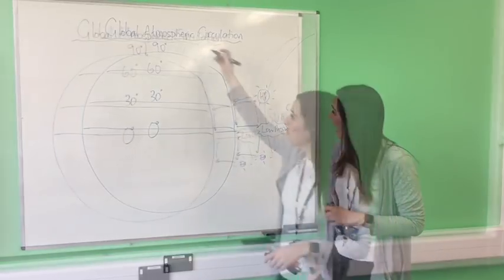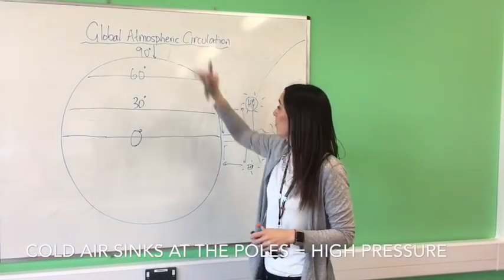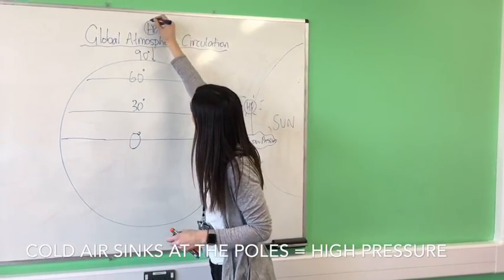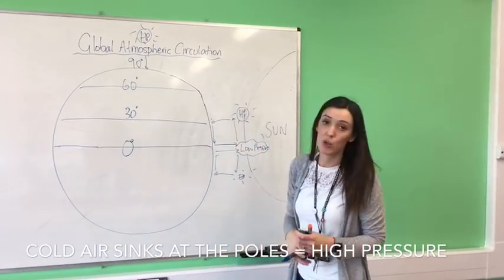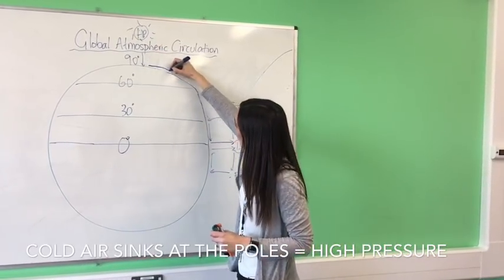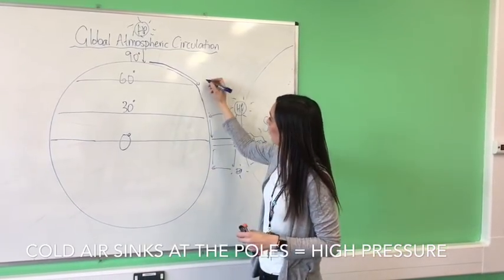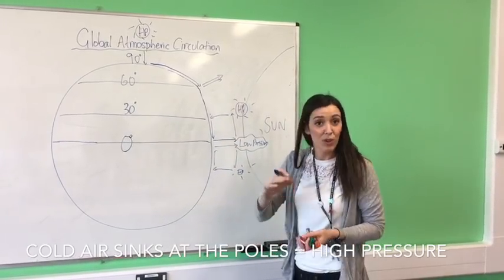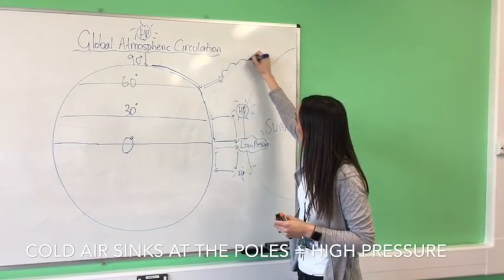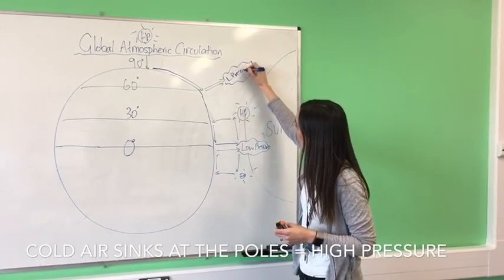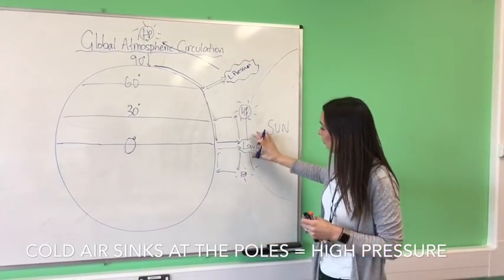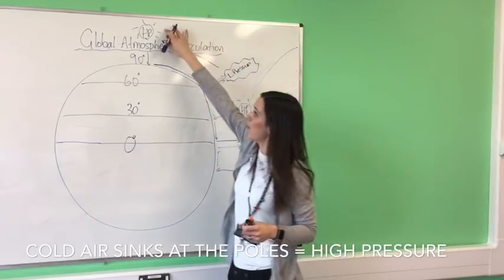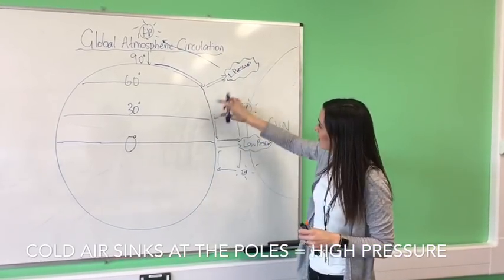At the poles, we've got cold air with high pressure - really sunny but very little rainfall or snow. That cooler air travels back towards the equator where it warms up. At 60 degrees, the warmer air rises, cools, condenses and creates clouds and low pressure again. So we've got an area of low pressure at zero, high pressure at 30, low pressure at 60, and high pressure at 90 - it alternates.